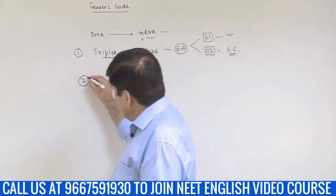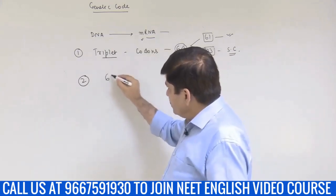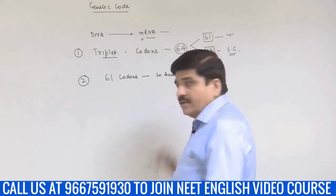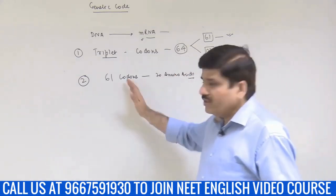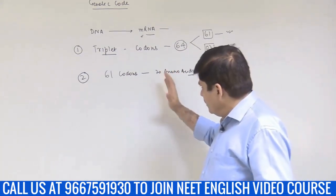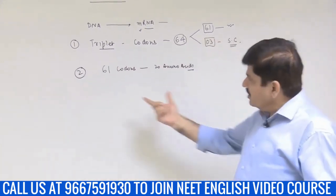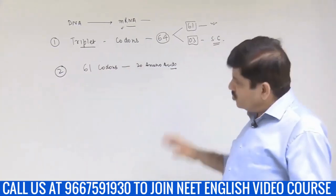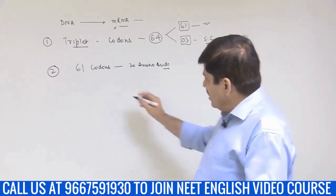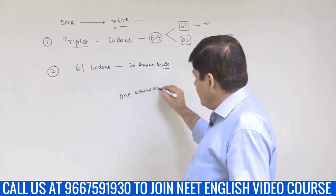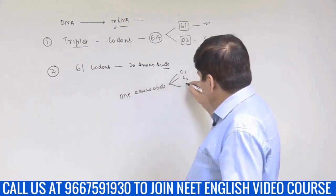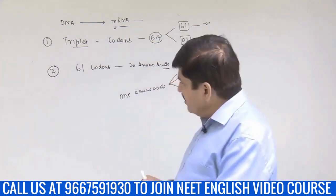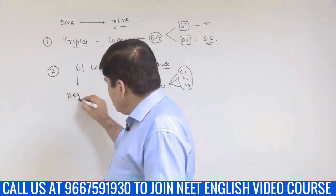The second point to understand about the genetic code is that, because it is triplet, there were 61 codons. There were 61 codons that will code for 20 amino acids. It is very logical to understand that there can be more than one codon for one amino acid. This is a very important concept, frequently asked in NEET entrance exam, and this is called as the degeneracy of genetic code.